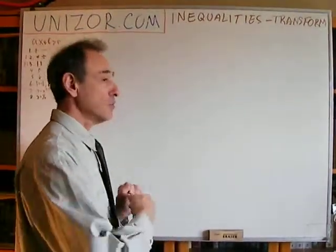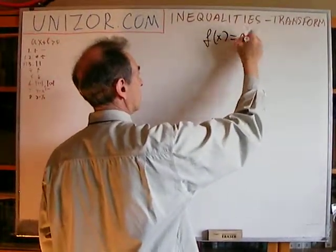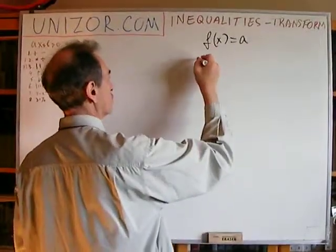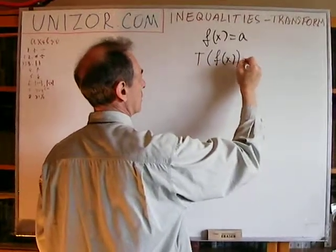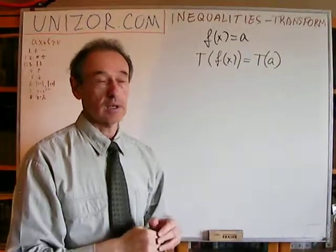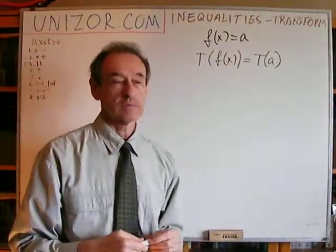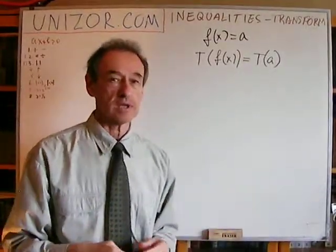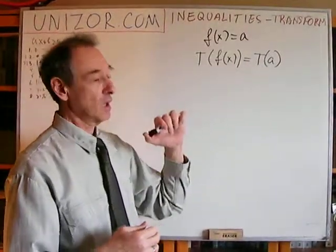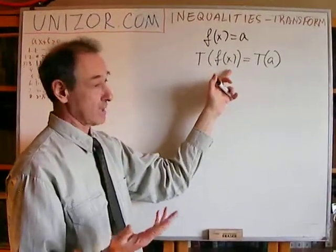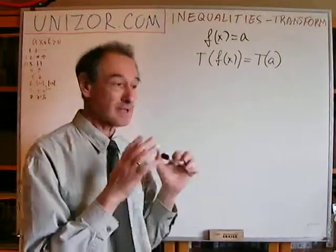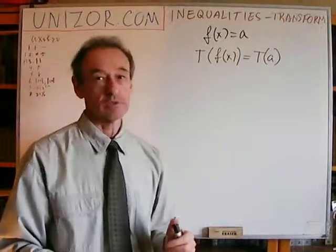Let me just remind you that if you have an equation like f(x) equals a, and you apply to both sides of the equation some function — let's say function T for transformation — the result of this function being applied to both equal arguments would also be an equation. You just apply the transformation and that's it. The transformation can be applied and there are no rules, basically. It will be an equality between these two sides.